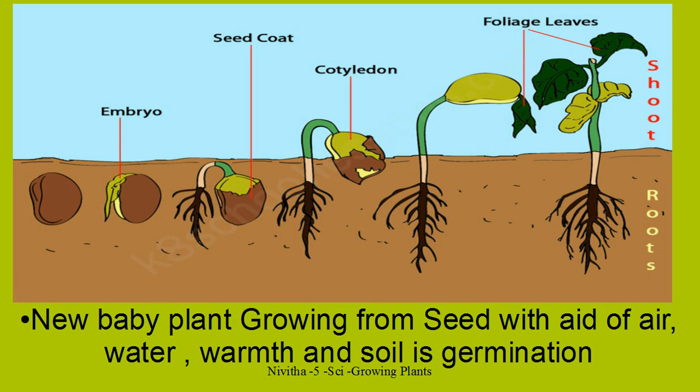First the radicle comes out as a root. This is the root that comes out. The growth of the radicle and plumule happens because the embryo in the seed eats up the food stored in the cotyledon. The cotyledon is the seed leaf. As it grows, the seed coat or testa wears away and breaks off.